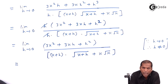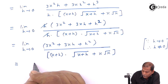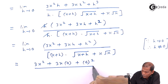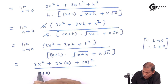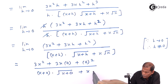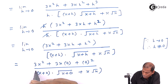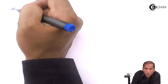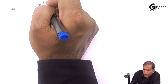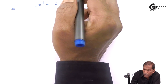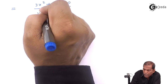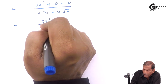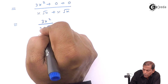Now we substitute the limit as h equal to 0. So the next step gives: numerator is 3x² + 3x(0) + 0² = 3x², and the denominator is (x+0) into square root of (x+0) plus x root x, which equals x root x plus x root x, giving 2x root x. So we get 3x² upon 2x root x.